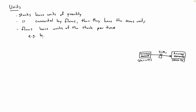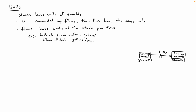Flows have the same units as the stock they're connected to, per time. So this birth flow would have to have units of biomass per second, or per hour, or per year. For example, in a bathtub: the stock units might be gallons, and the flow out through the drain would be gallons per minute.